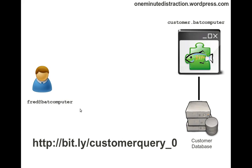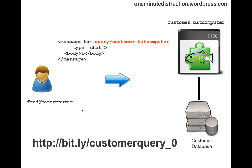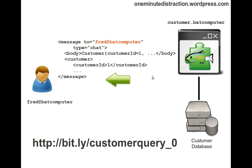We have a client, say fred.batcomputer, who has logged on to an XMPP server. The client sends a message to query at customer.batcomputer subdomain. In the body of the message, we put the customer ID that we wish to retrieve the record. When the component receives this message, it queries the database using the customer ID and returns the customer record back to the client.